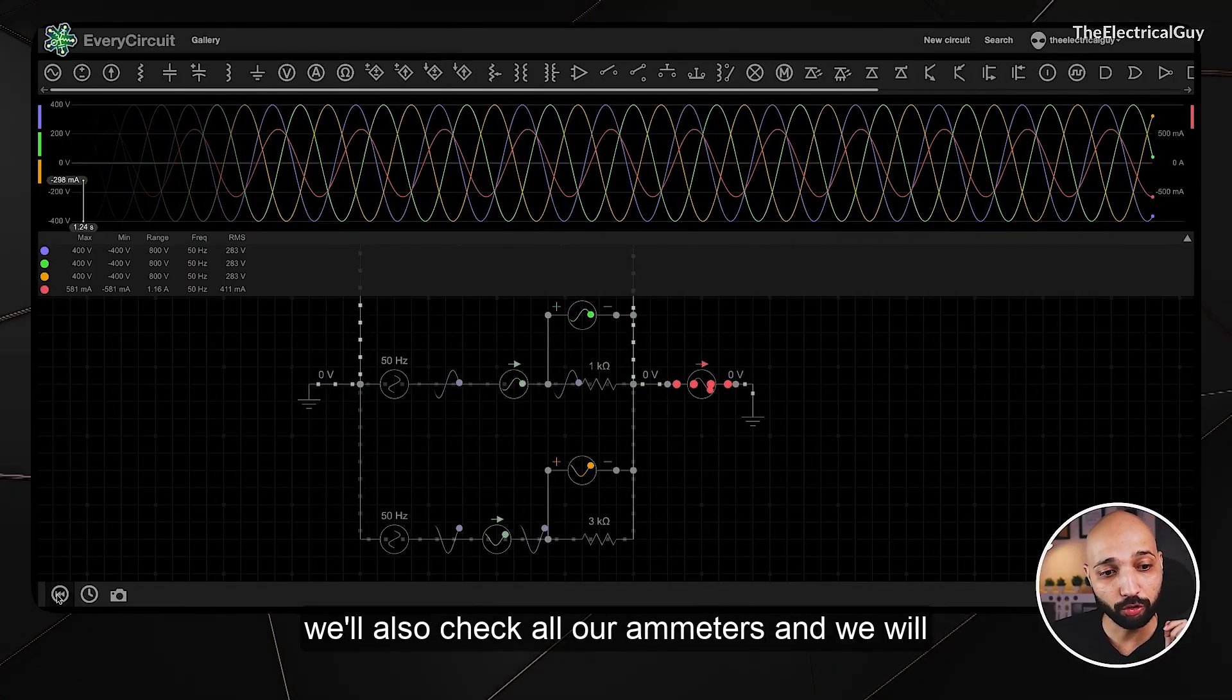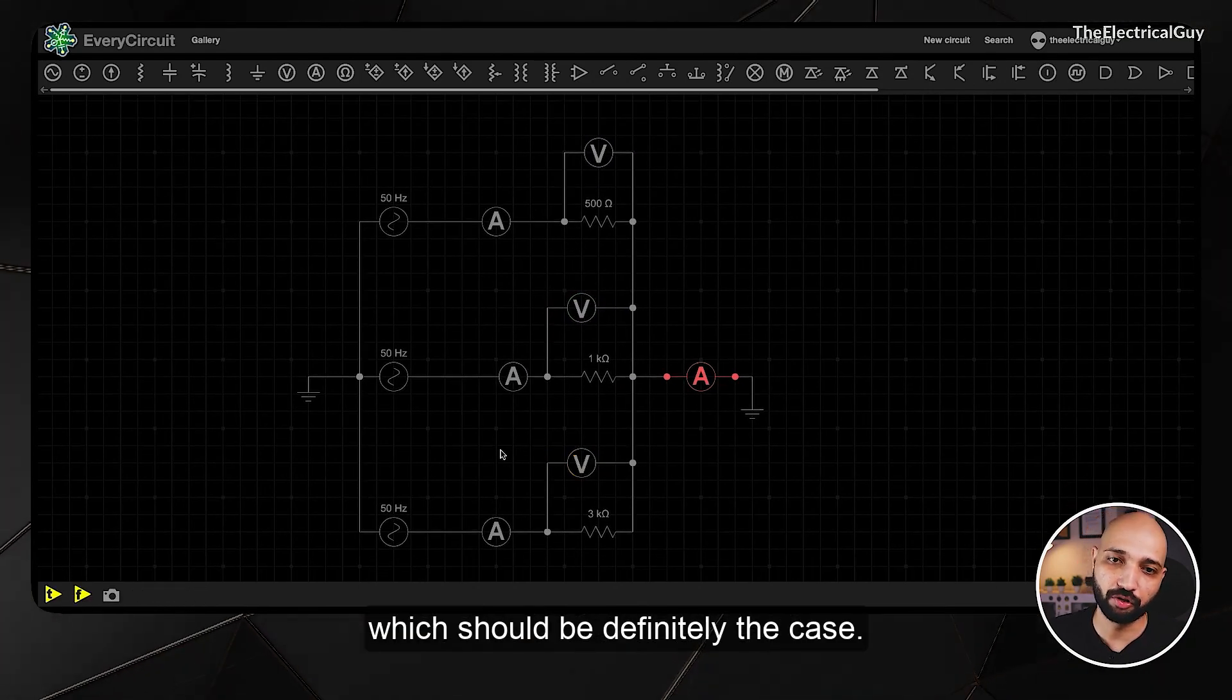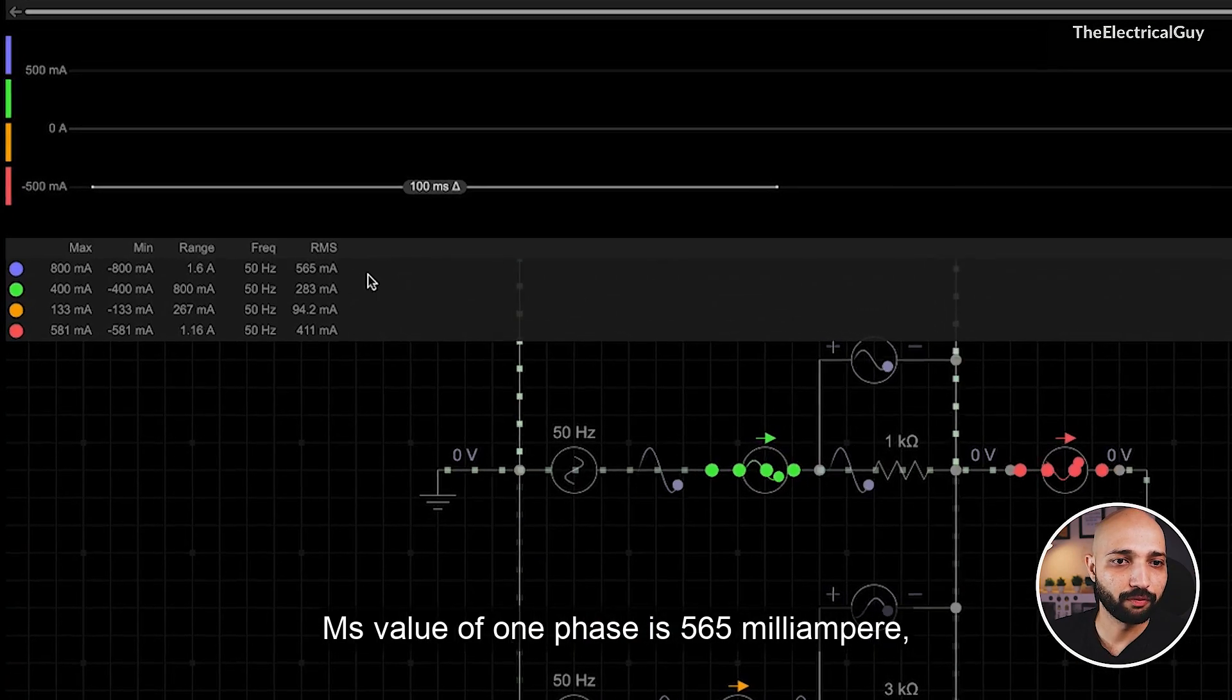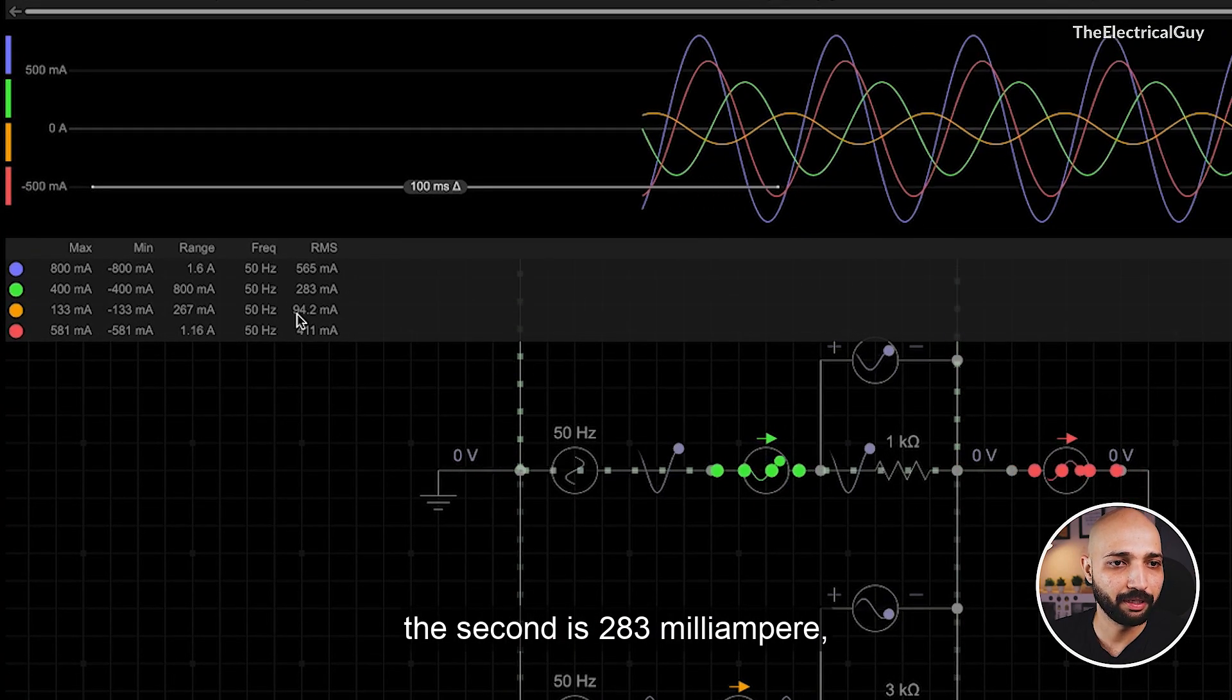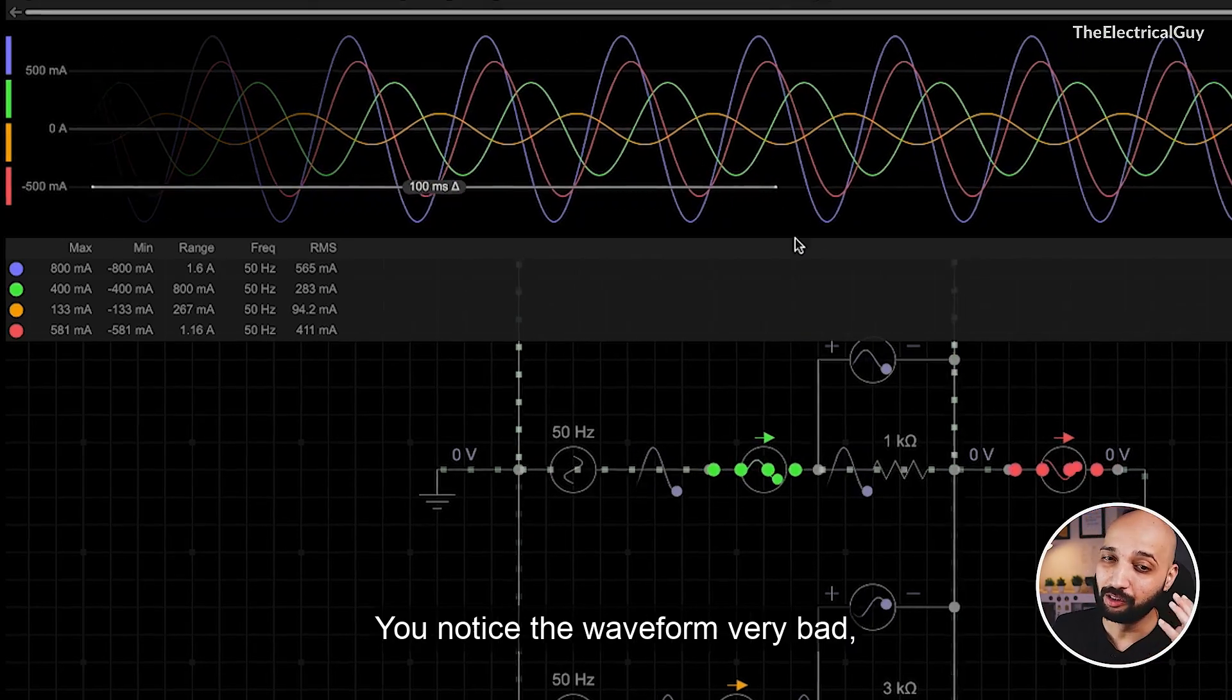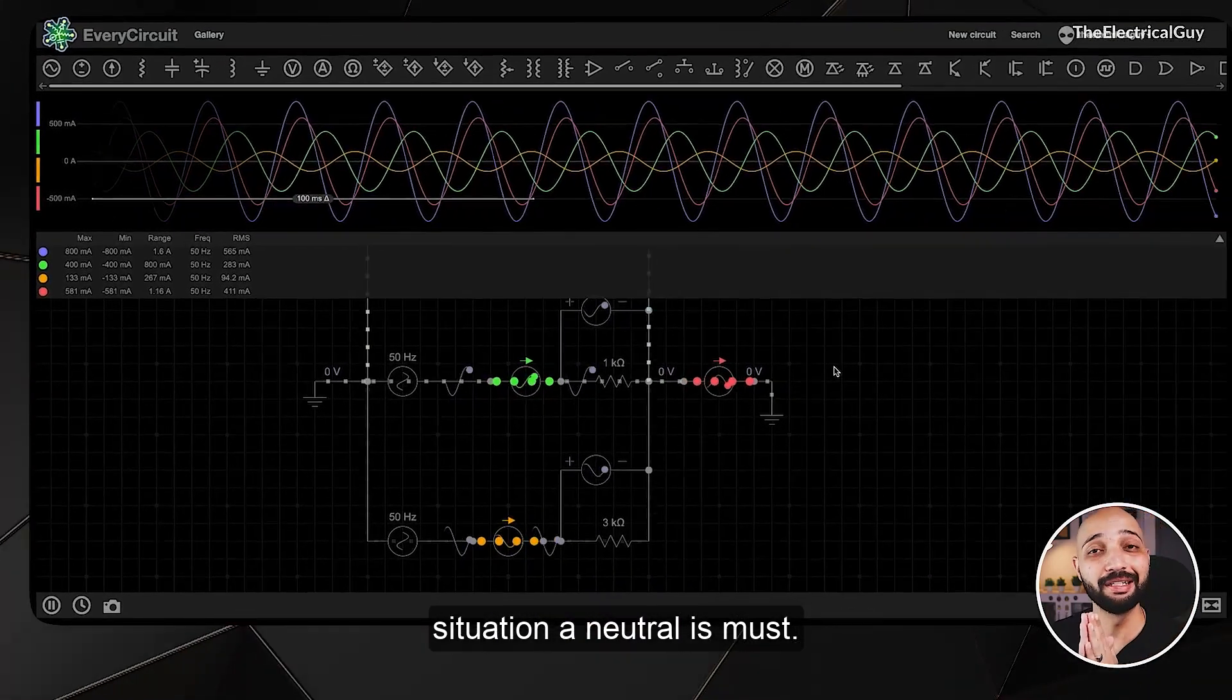We will also check all our ammeters and see if the current flowing is different, which should definitely be the case. The RMS value of one phase is 565 milliampere, the second is 283 milliampere, the third is 94.2 milliampere, and the red one indicates the current flowing into the neutral wire.